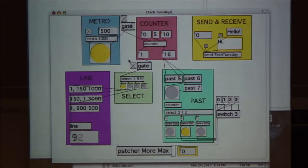Right now when it hits 1, the selector box is triggering a message. That selector box is connected to line, this line object, and line takes messages. This first message box at the top is 1 to 150 in 1,000 milliseconds. The second one is 150 to 1 in 3,000 milliseconds. So it's just going from that number to the second number in a certain time. And the selector is triggering when it should activate.